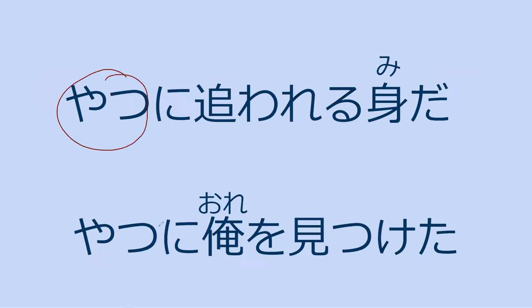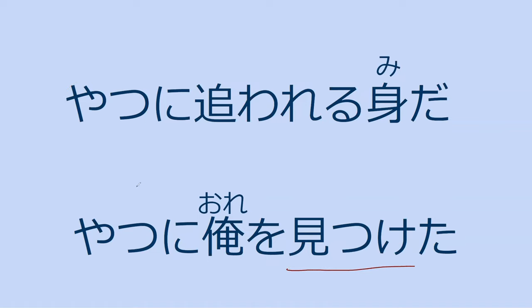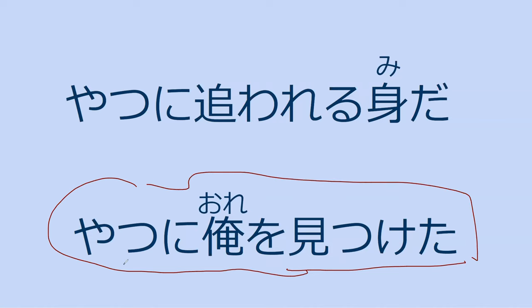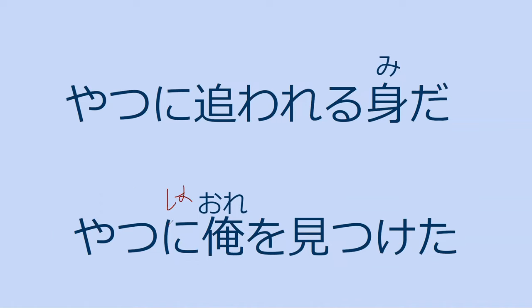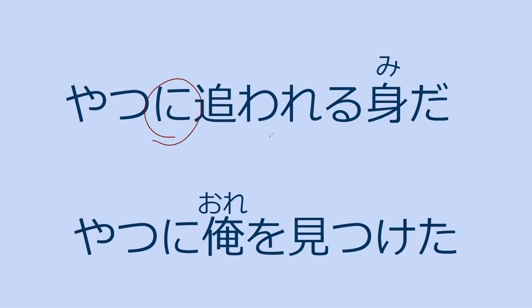You know what yatsu means? That guy. It simply means that guy. So that also works with mitsuketa. If I said 'yatsu ni ore wo mitsuketa,' that means that guy found me. In the actual line of the book, they're using ni, which is a kind of complex reading. They used ni in the previous line and wanted to keep it consistent to avoid too many shifting particles.